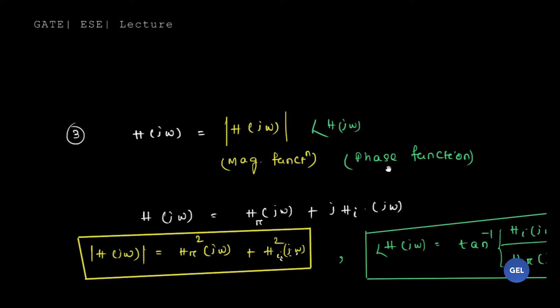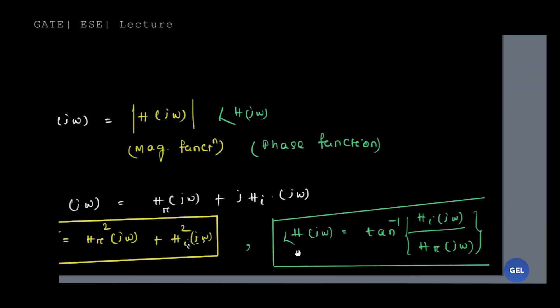It has a magnitude function and it has a phase function as well. The magnitude function is nothing but the real part squared and imaginary part squared. The phase function is nothing but the inverse tangent of imaginary part divided by the real part.